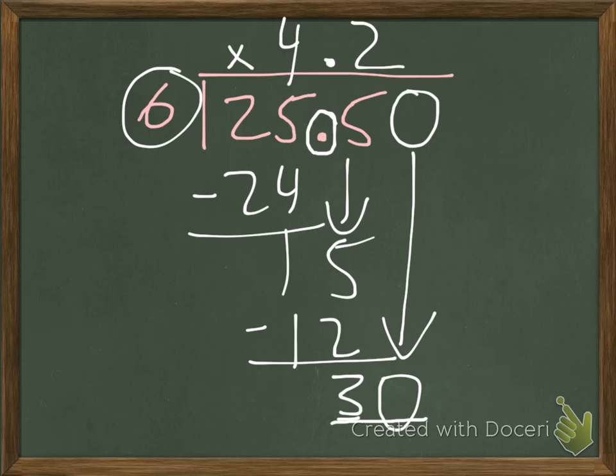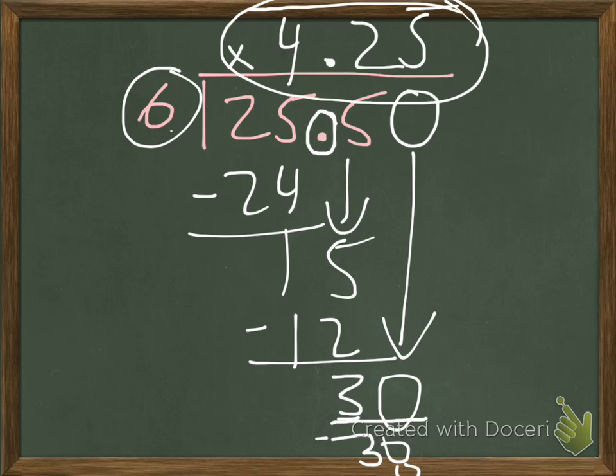Now that we're able to bring down that 0, we divide 30 hundredths divided by that 6, which will then be 5. We won't have any remainder. And in each bag, there will be 4 and 25 hundredths ounces of that trail mix. And that's how we could write 0s in the dividend to divide when we want our quotient in decimal form.